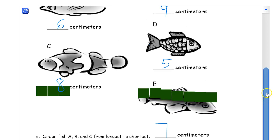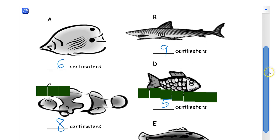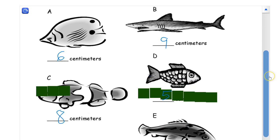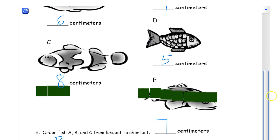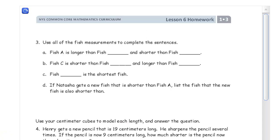Now I need to put them in order from longest to shortest. The longest one is E at 7. Then B at 9, and then the shortest. What's shorter, A or C? Well A is 6 and C is 8, so A is shorter. So A is the shortest and C is in the middle.